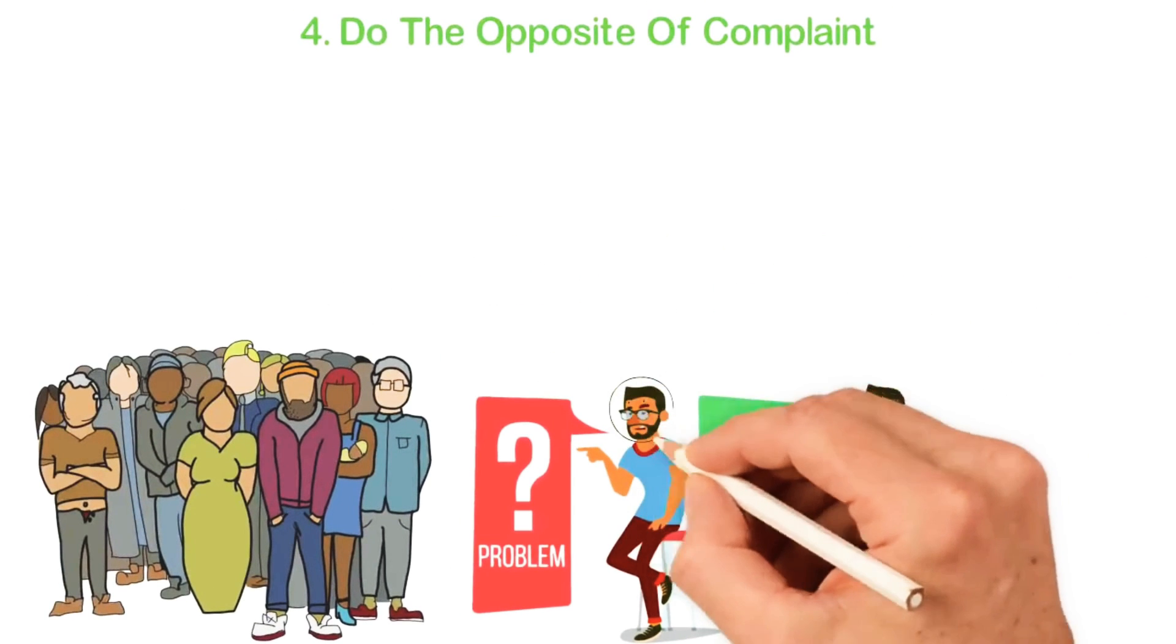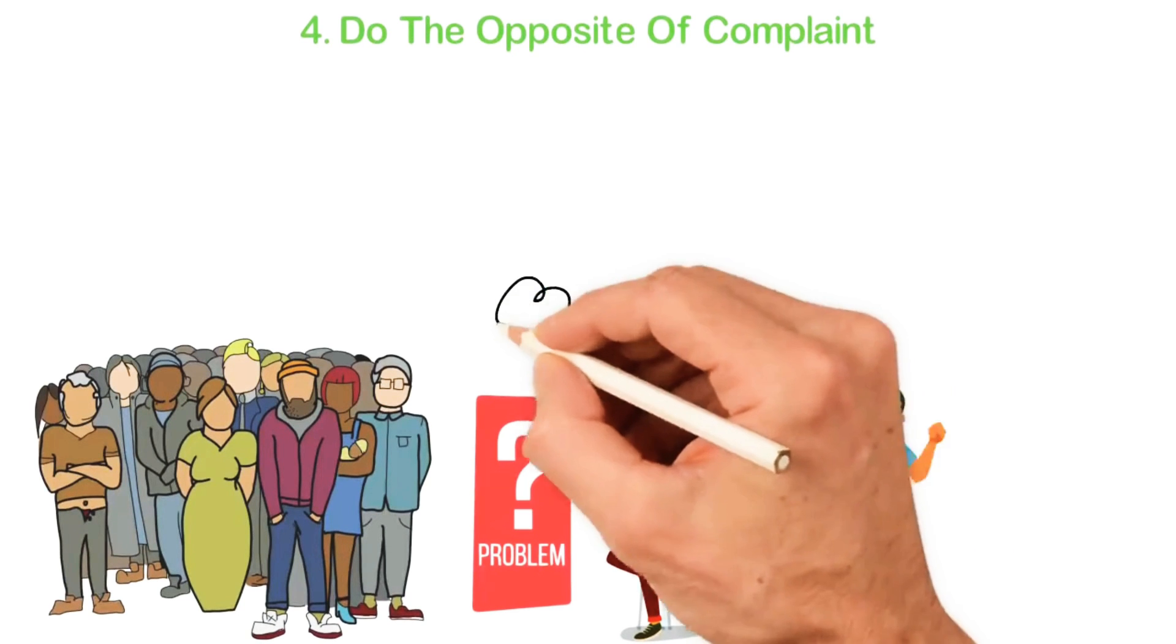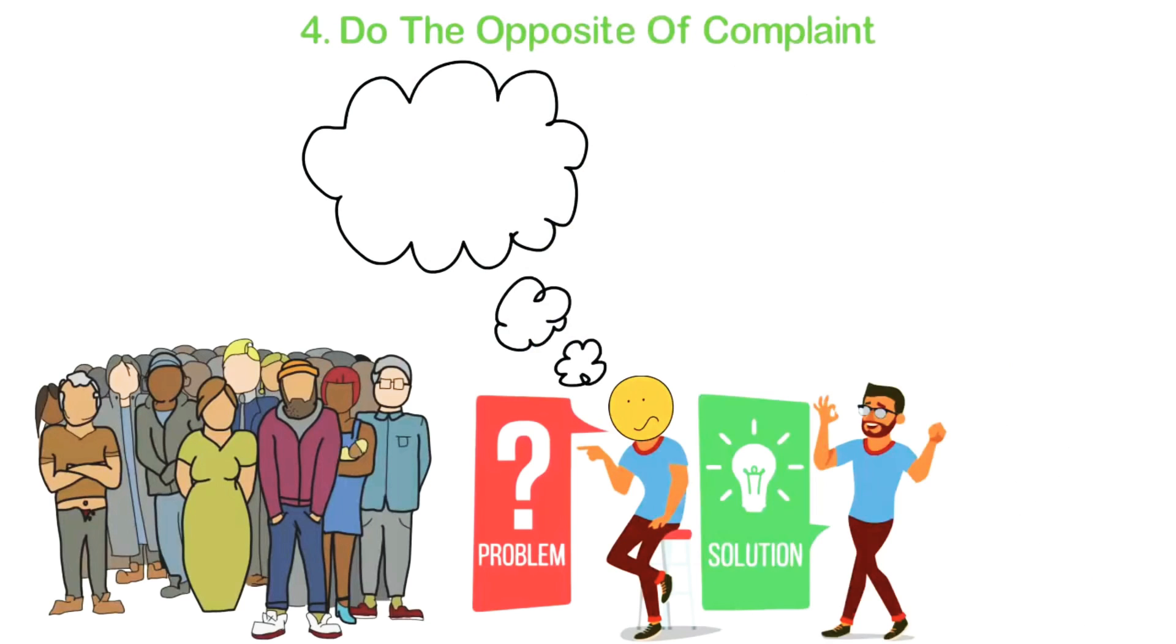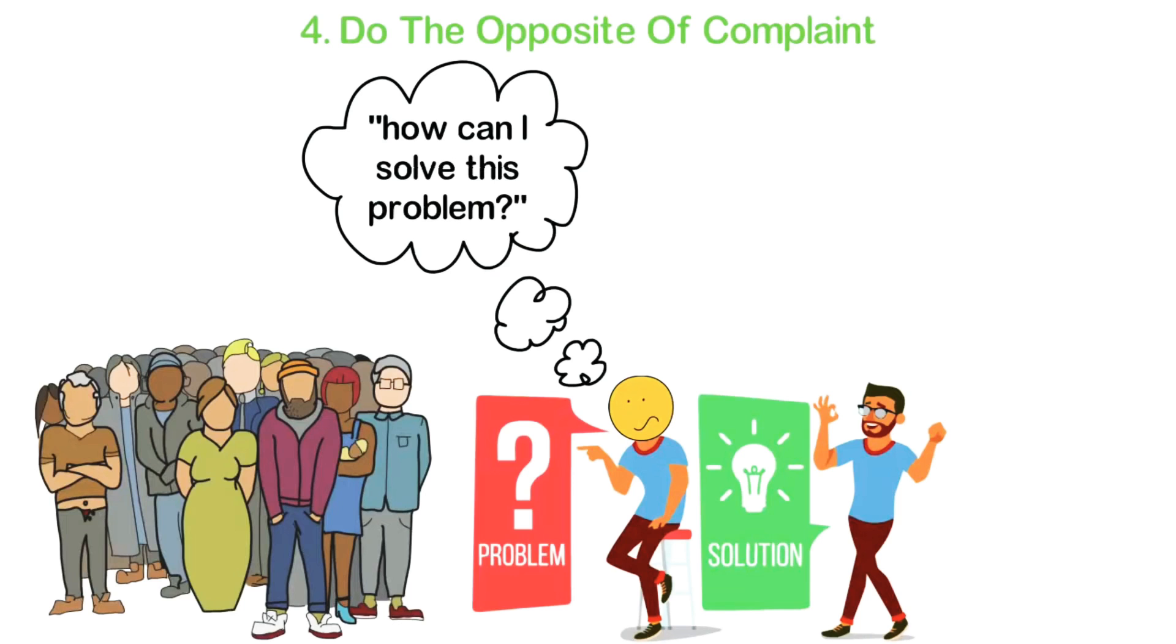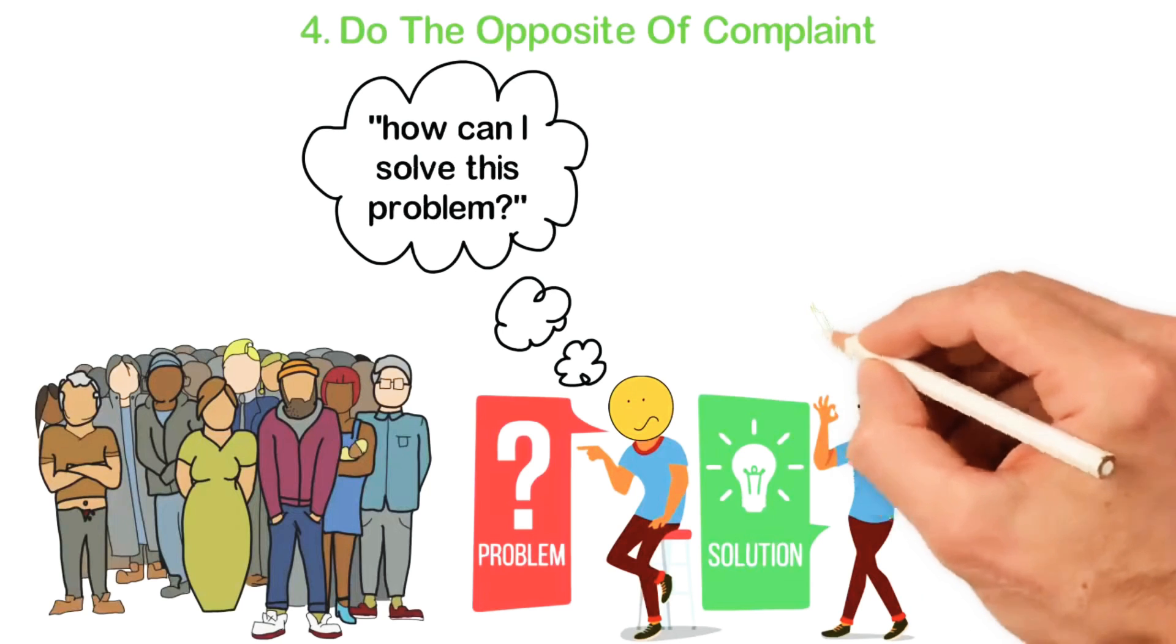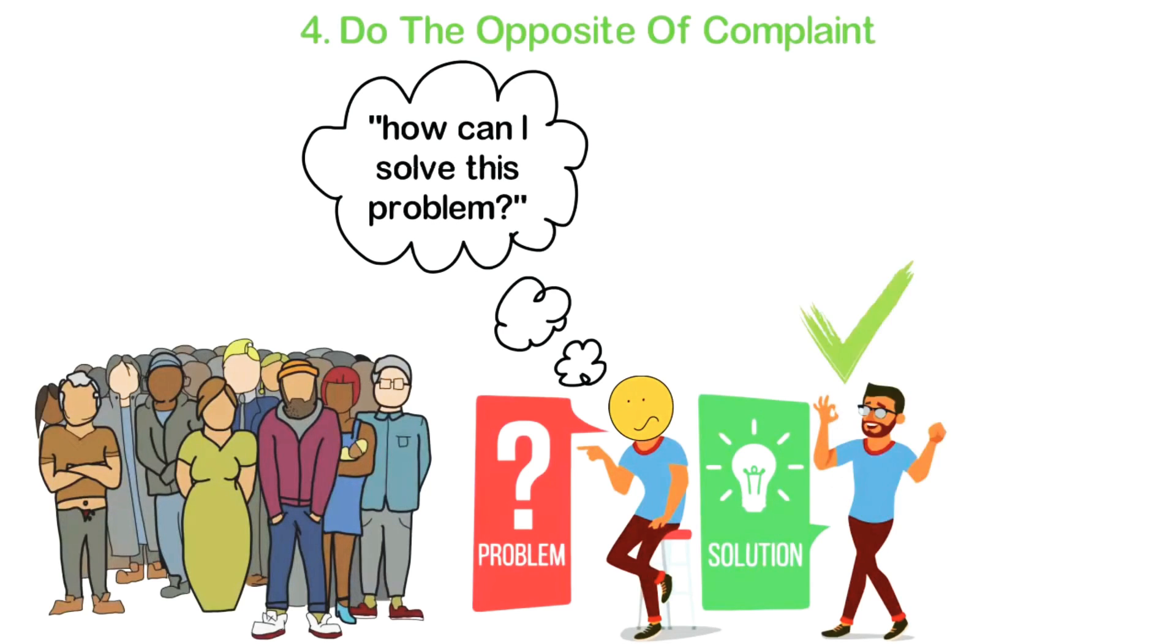If you truly want to build a great business, you have to stop complaining about anything that's wrong. Instead, pay attention to what people complain about and ask yourself, how can we solve this problem? Again, this makes you feel like a Messiah and that's fine because until you feel a great responsibility towards the world, until you're angry about something and you're willing to spend your whole life changing it, until you think like a Messiah, you can't build a great company.